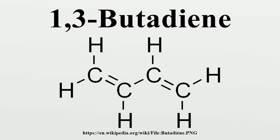1,3-butadiene is a simple conjugated diene with the formula C4H6. It is an important industrial chemical used as a monomer in the production of synthetic rubber. The word butadiene usually refers to 1,3-butadiene, which has the structure H2C=CH-CH=CH2. Although butadiene breaks down quickly in the atmosphere, it is nevertheless found in ambient air in urban and suburban areas as a consequence of its constant emission from motor vehicles.